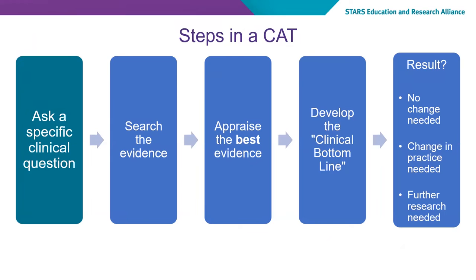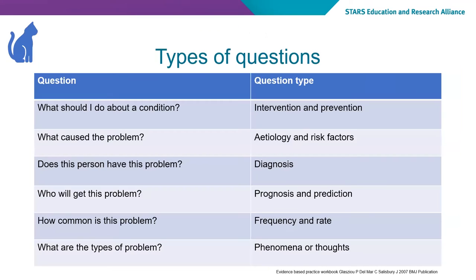The CAT process is a series of steps to find an answer to your clinical question. Today we are looking at the first step: how to ask a specific clinical question. When searching for evidence, the type of clinical question helps determine the study type or the evidence you are looking for.